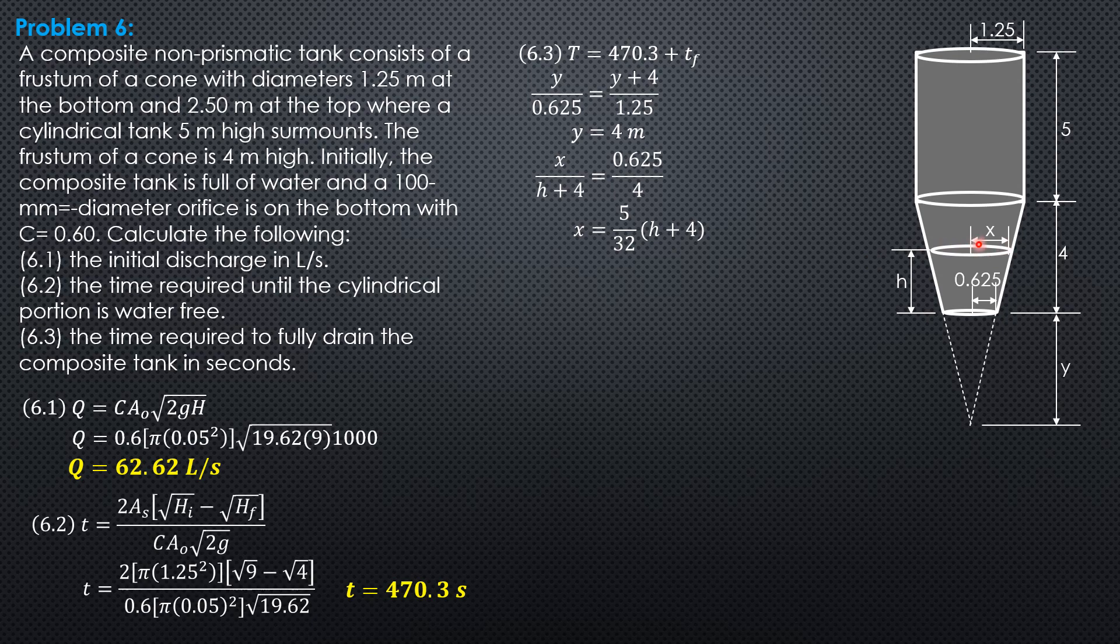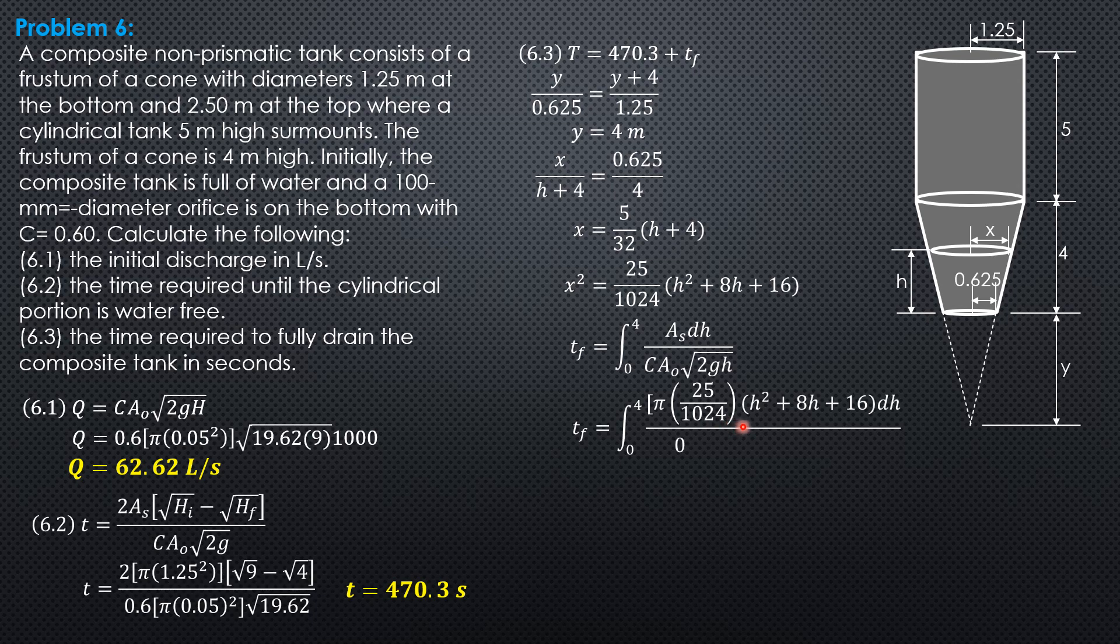Since area S is πx², so S = πx². x² is (25/1024)(h² + 8h + 16). Integrating from 0 to 4, t_f = ∫(πx²/CA₀√(2gh))dh over 0.6 × π(0.05)² × √19.62. Computing the constant, 25/1024 over (0.6 × 0.05² × √19.62), that would be 3.6745.